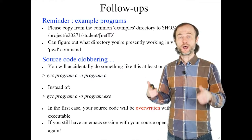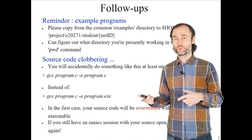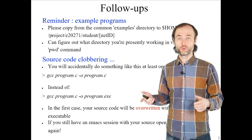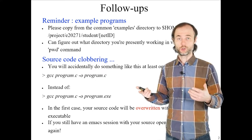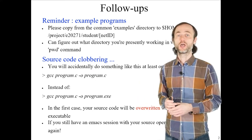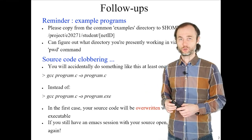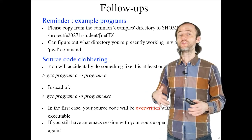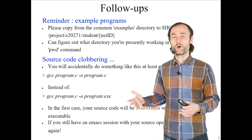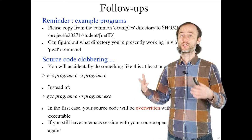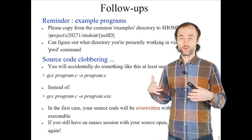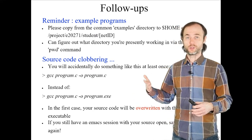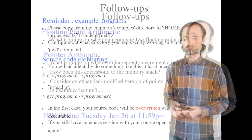This is yet another example of why you might want to use version control such as Git. Please go back to lecture one and two where I give links to tutorials where you can learn how to use version control. That way, even if you accidentally overwrite the source code, you can always restore it from the version control system.